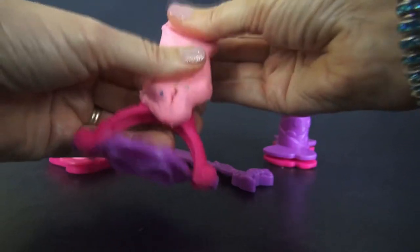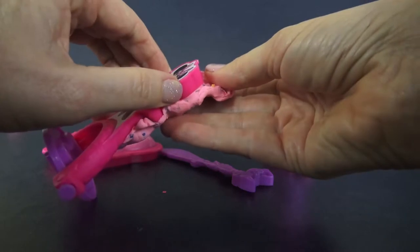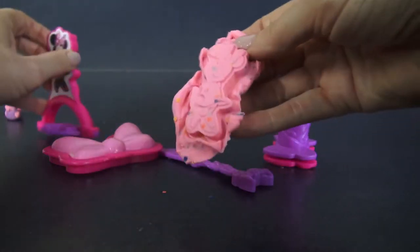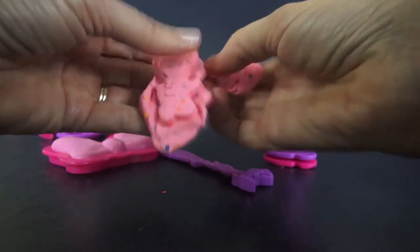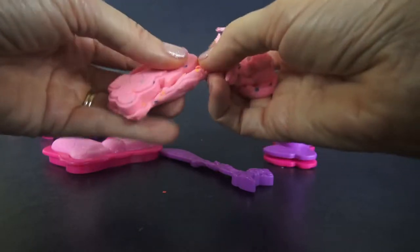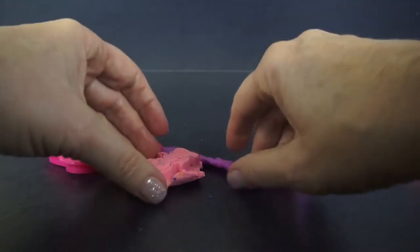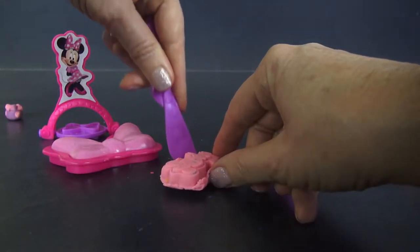So there we go. Now let's take her out. So now we start with our little Minnie Mouse and we'll take off the excess, or I'll tell you what, let's just use one of our tools to take that off. Just cut right around there.